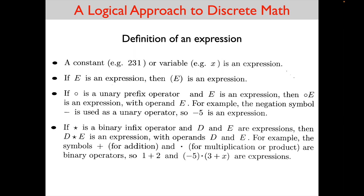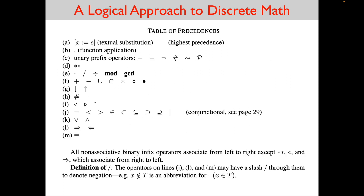I will leave examples of expressions to the main lectures. Here again is the table of precedences described in the main lecture, starting with textual substitution which has the highest precedence on row A, and the equivalence sign on row M at the bottom which has the lowest precedence. I will leave examples of how precedences work to the main lecture.